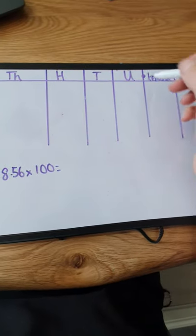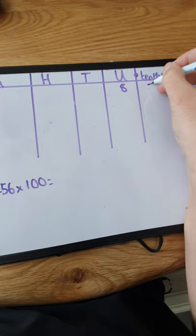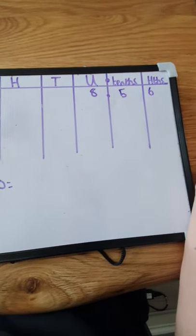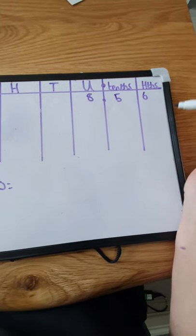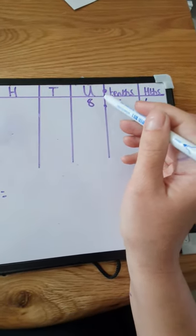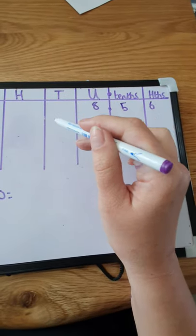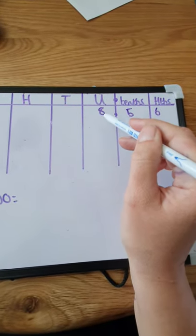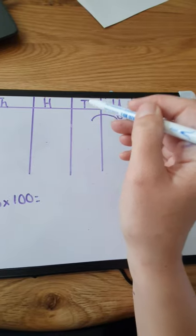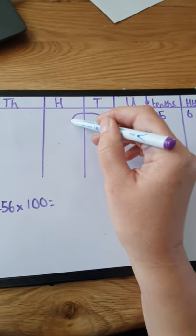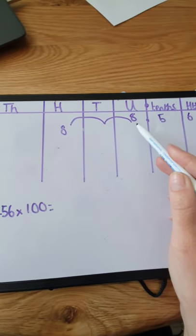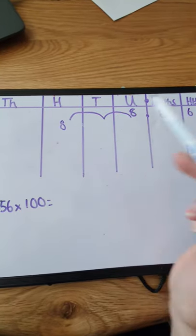8.56 is telling us we've got 8 units, 5 tenths and 6 hundredths. If we're multiplying by 100, we're making it 100 times bigger in value. What we do, using our place value chart, is move each digit up in value 2 places. Our 8 would go up in value — move it up once, we're times-ing it by 10; move it up twice, we're making it go up 100 times in value. So our 8 units would actually move into the hundreds column.